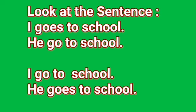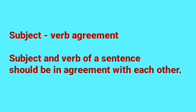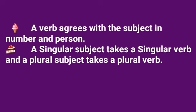Look at the sentences: 'I goes to school' and 'He go to school.' Which one is the correct form? Can you guess it? 'I go to school' and 'He goes to school' is the right form — proper subject and verb agreement is there. So, subject and verb of a sentence should be in agreement with each other. A verb agrees with the subject in number and person. A singular subject takes a singular verb and a plural subject takes a plural verb.